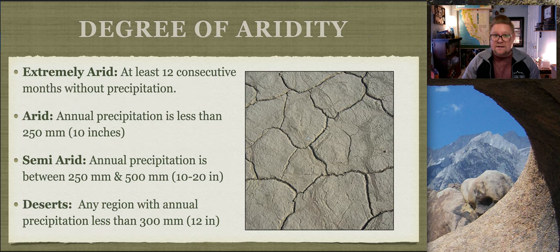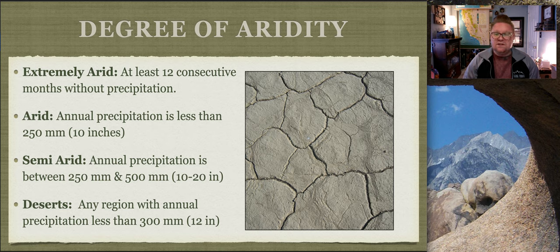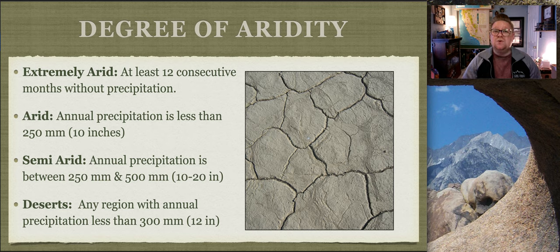The next thing to look at is aridity - how dry is the environment. We have three values of aridity. The first is extremely arid, meaning that location has had no precipitation for at least 12 months. These places do exist - there are places that receive in a year the equivalent of the thickness of a strand of hair, usually as snow.